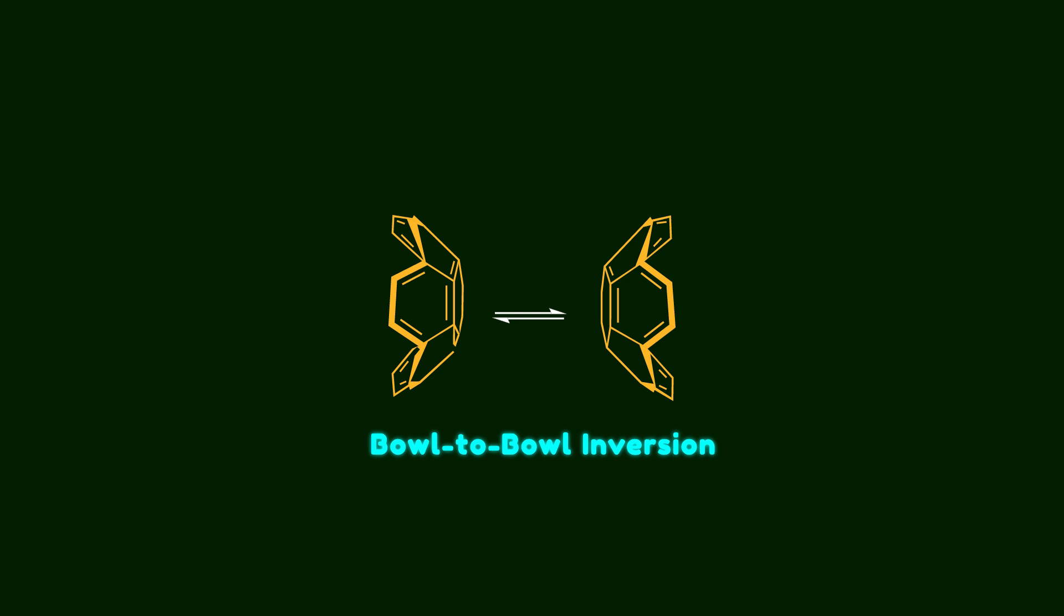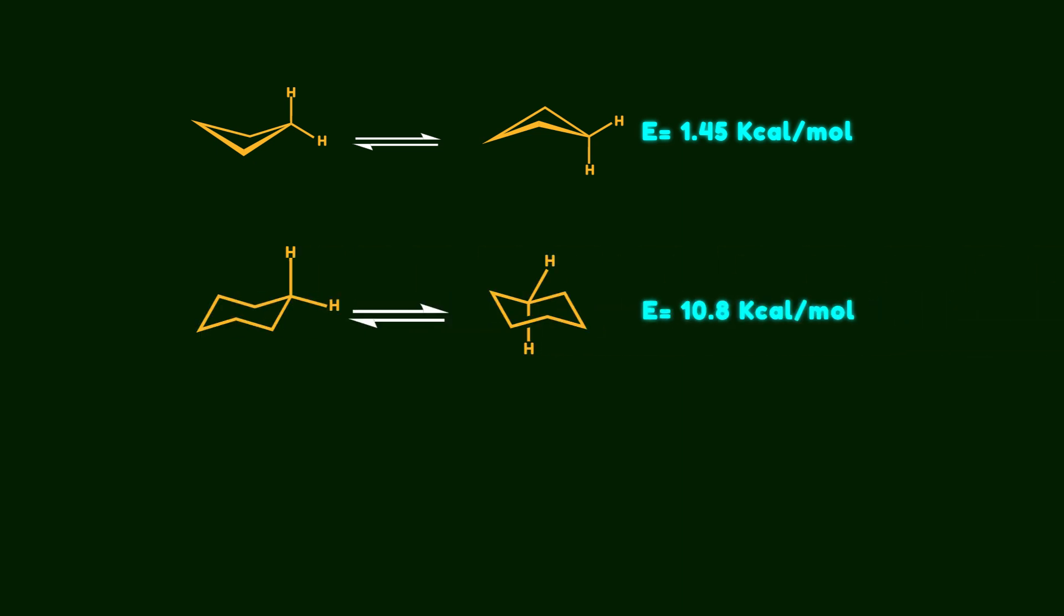To get a clear picture of this motion, let's think about the numbers. The butterfly motion in cyclobutane only takes about 1.45 kcal per mol. The ring inversion in cyclohexane is a bit harder, it needs around 10.8 kcal per mol. But in sumanene, the value is almost doubled. The bowl-to-bowl inversion requires 18.2 kcal per mol.